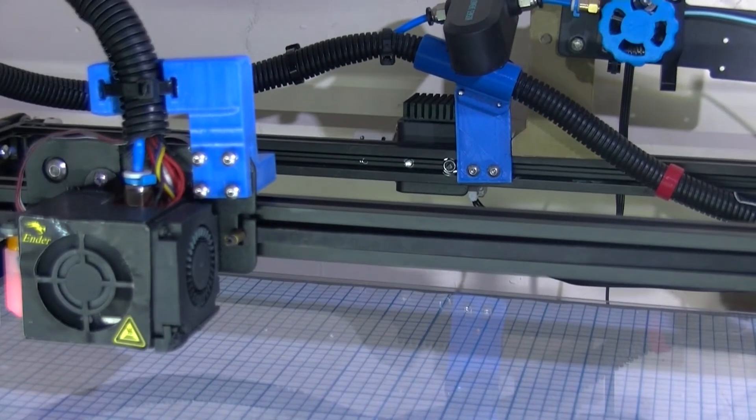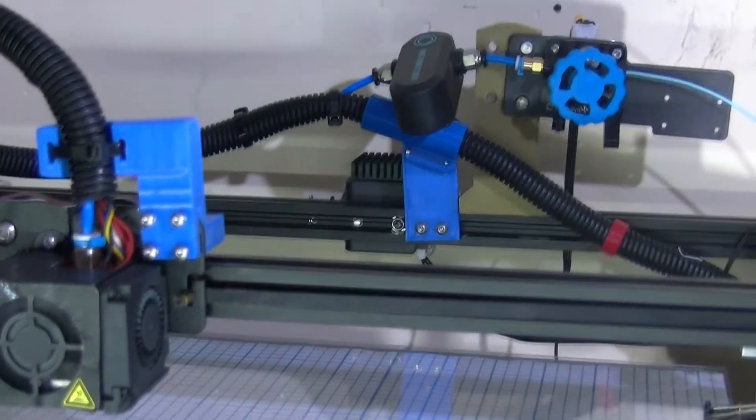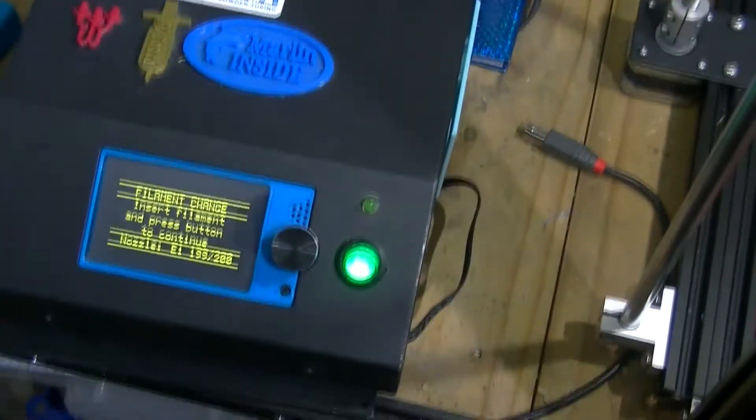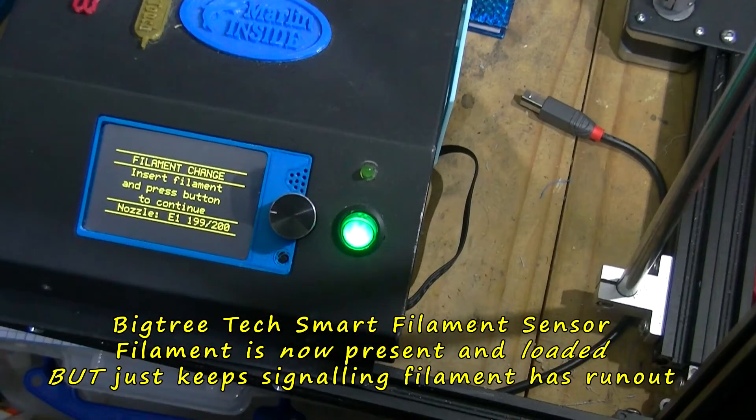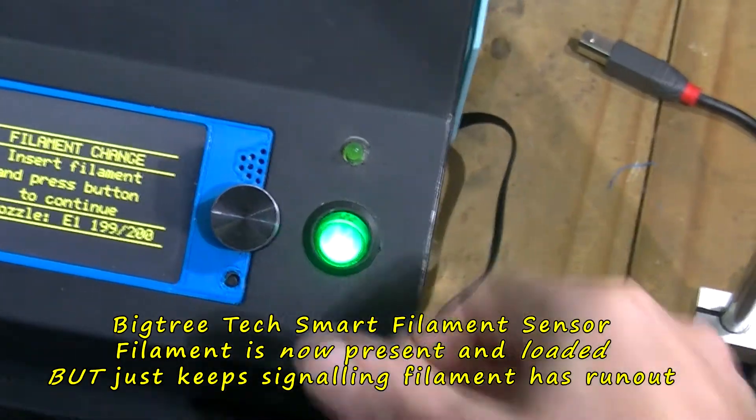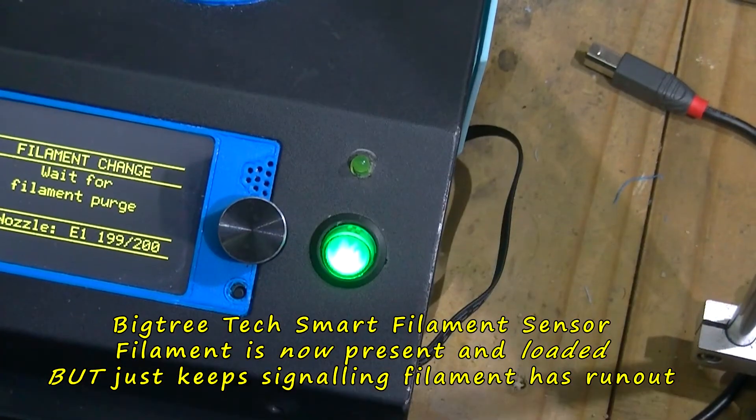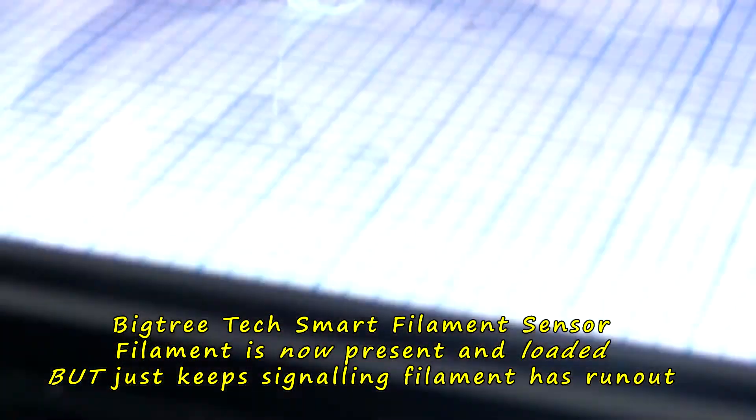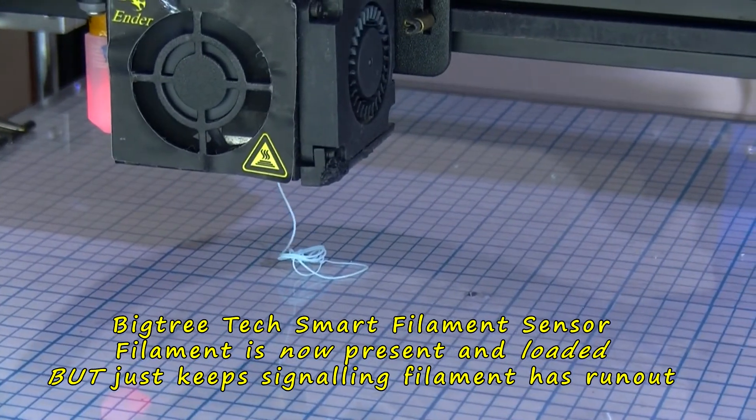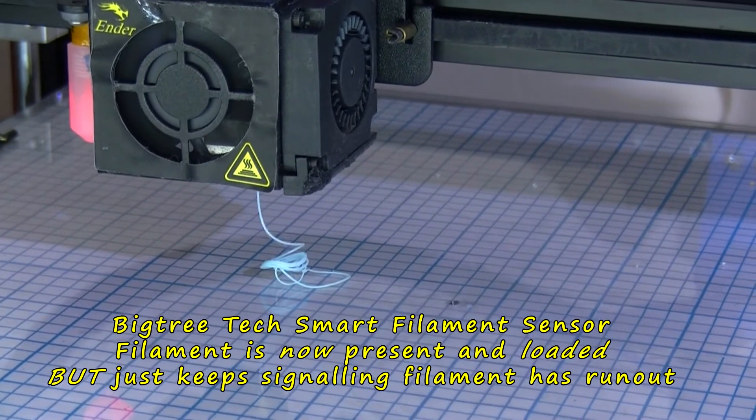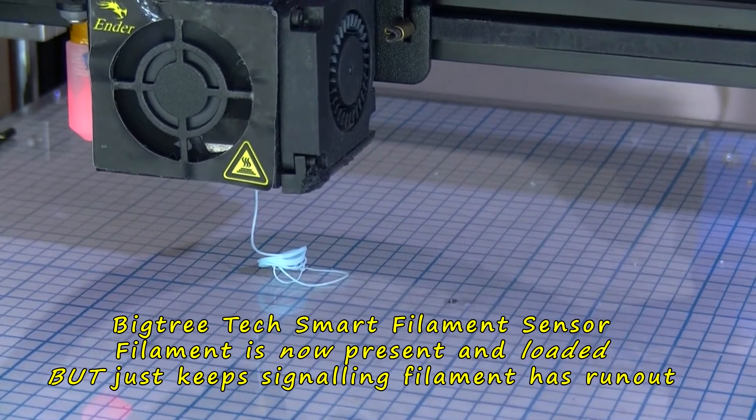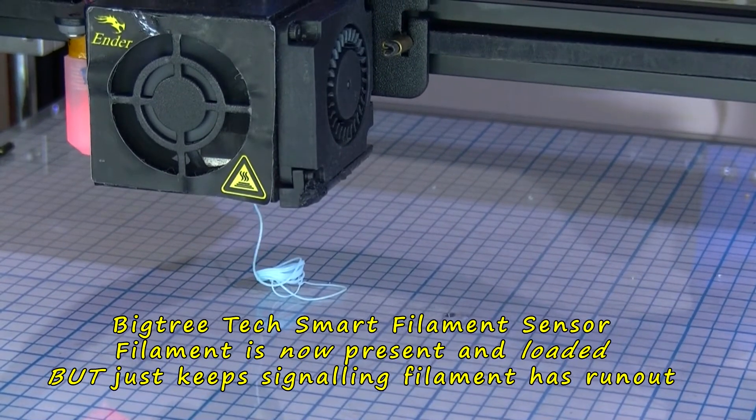So there you are, it's just starting up now. 'Insert filament, please press button to continue.' So I'm going to continue. It's purging some filament now - that's about 50mm that it asks for. That's just purging to clean the nozzle, make sure that's working.